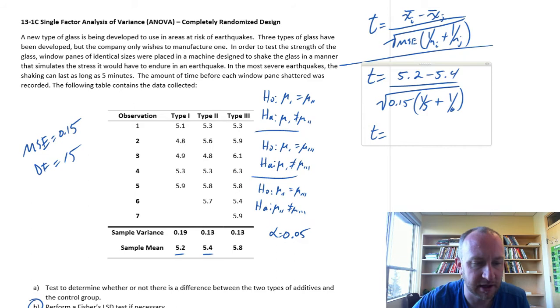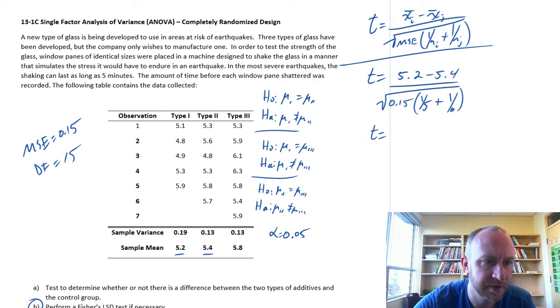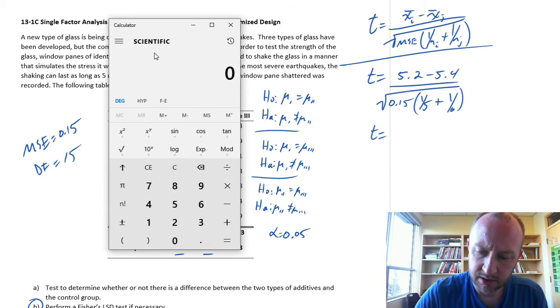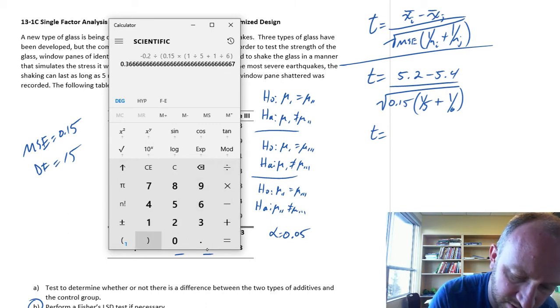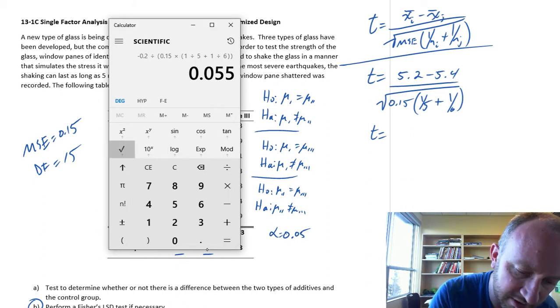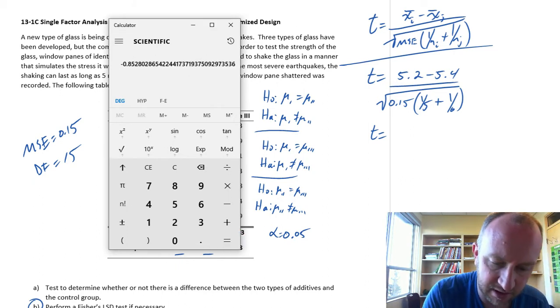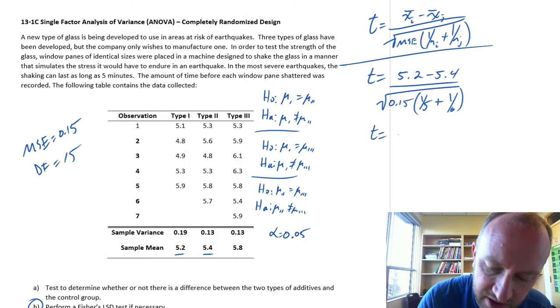So let's, where'd my calculator go? Looks like I closed it by accident. Okay, so 5.2 minus 5.4 equals divided by, open the brackets, 0.15 times, open another bracket, 1 over 5 plus 1 over 6. Close that one, close that one. Take the square root of that one. And we have our final answer, negative 0.85. Negative 0.85.